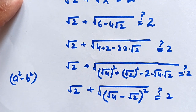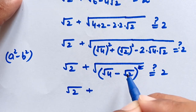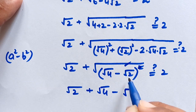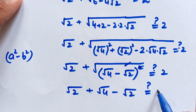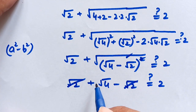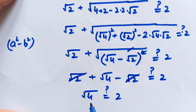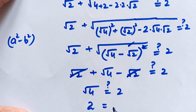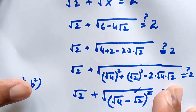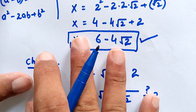So we have square root of (2 plus (square root of 4 minus square root of 2) squared). This square cancels with this square root, giving square root of (2 plus (square root of 4 minus square root of 2)), which equals square root of (2 + 2 minus square root of 2) — since square root of 4 equals 2 — and this simplifies to 2. The left-hand side equals the right-hand side, so x equals 6 minus 4 times square root of 2 is the correct answer.